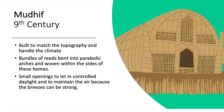The mudhiff of the ninth century. Built to match the topography and handle the climate. Bundles of reed were bent into parabolic arches and woven within the sides of these homes, making them very sturdy due to the land they were built on, and the reeds were readily available in the area. Small openings let in controlled daylight and maintain airflow, because the breeze can get really strong. The small holes help control how much air is let in and out without blowing the house over, and also control the light.